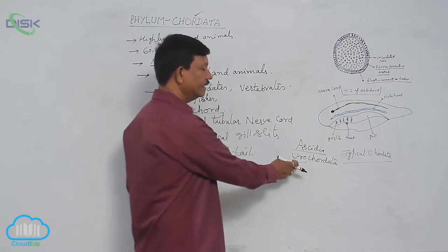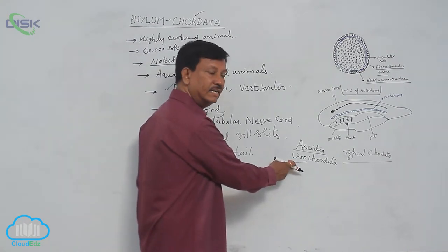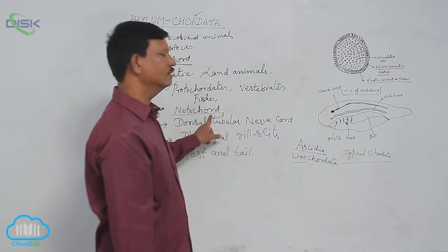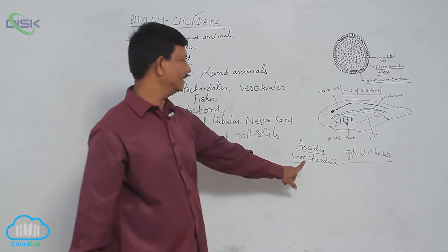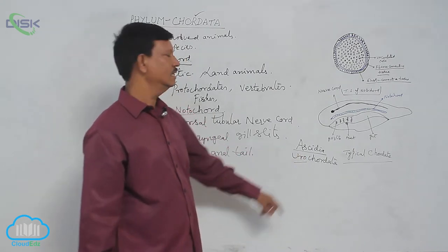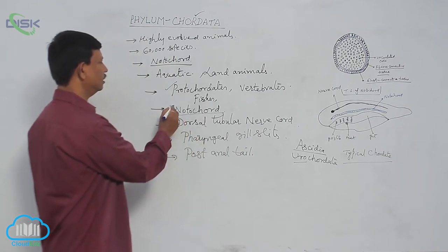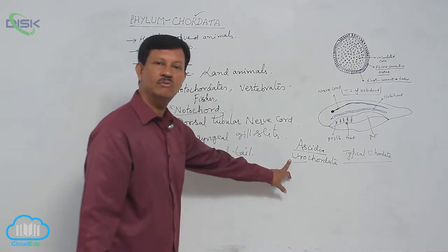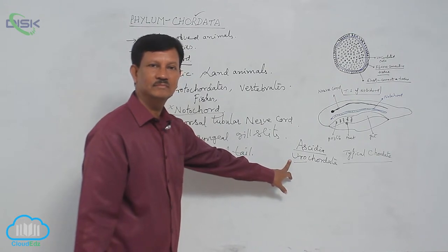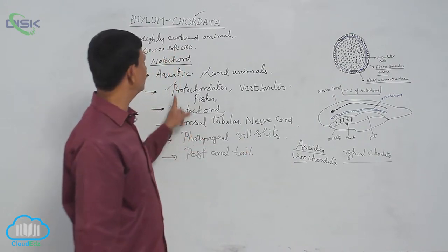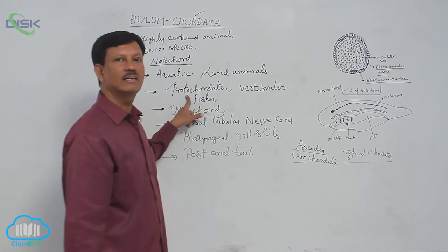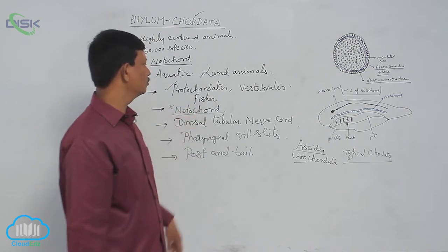During retrogressive metamorphosis, the tail as well as notochord both disappear in the adult condition. In adult urochordates, notochord is not present. But in the larval forms, notochord is found at the tail region. Hence, they are included in the Chordata as primitive chordates and are included in the Protochordata.